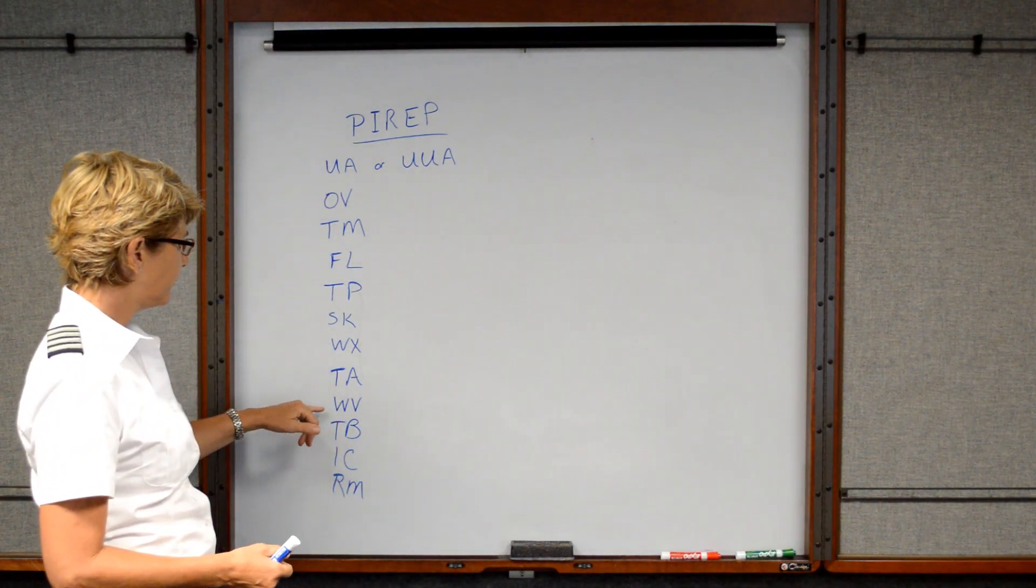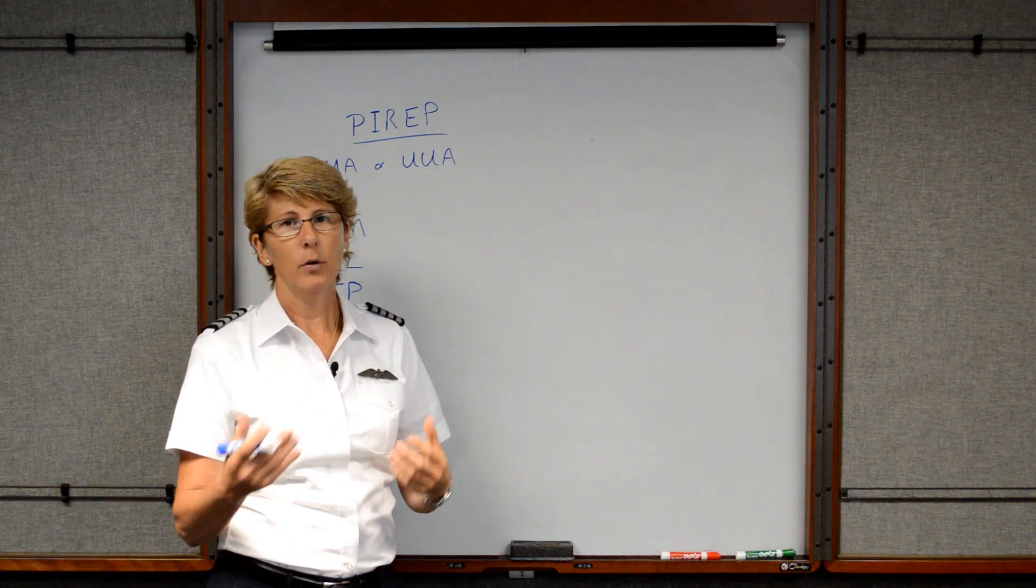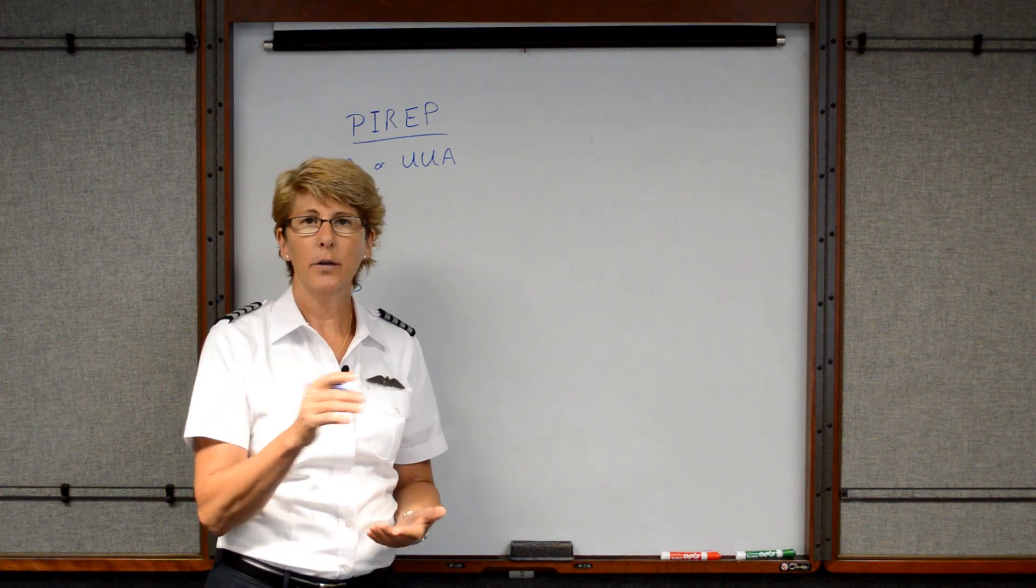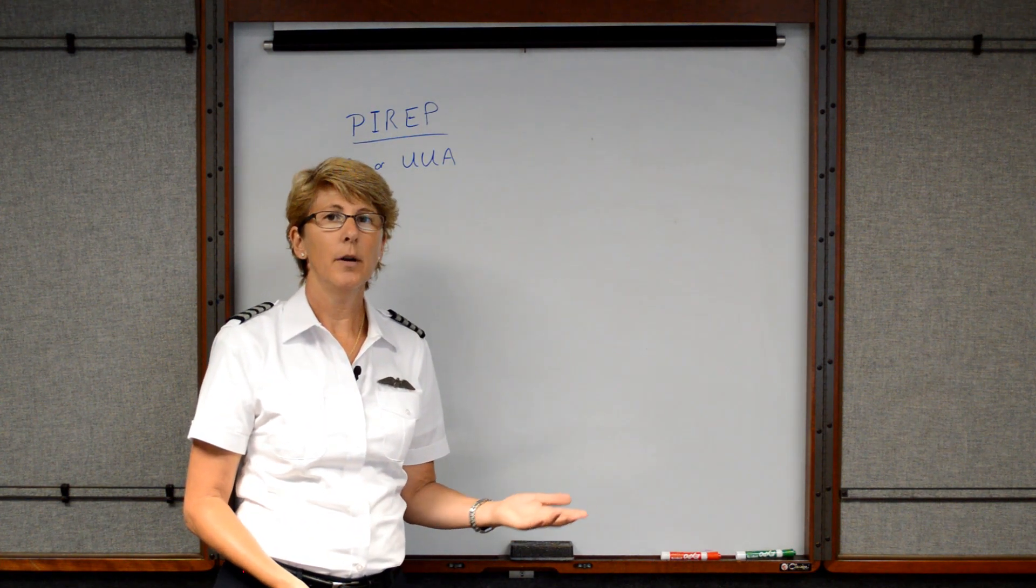Next we have the wind velocity. WV would be the wind velocity. So if you have equipment on board that actually reads the wind direction, you could of course give that. Maybe the winds are out of 290 at 22.